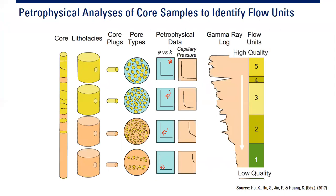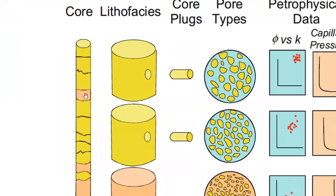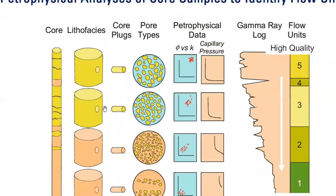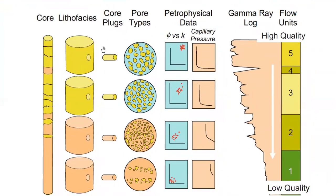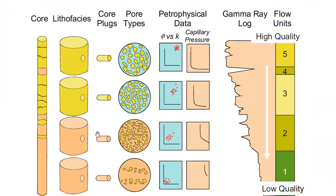This is the petrophysical analysis of core samples to identify flow units — another depiction of the poro-perm relationship. We start from the left of this core: we have a yellow area, then a little orange, then yellow again and orange. Based on the characteristics, physics, textures, and visualization of each rock, we divide them into four lithofacies. From this body of rock we take core plugs — one, two, three, and four — and analyze them using a microscope to see the pore types.